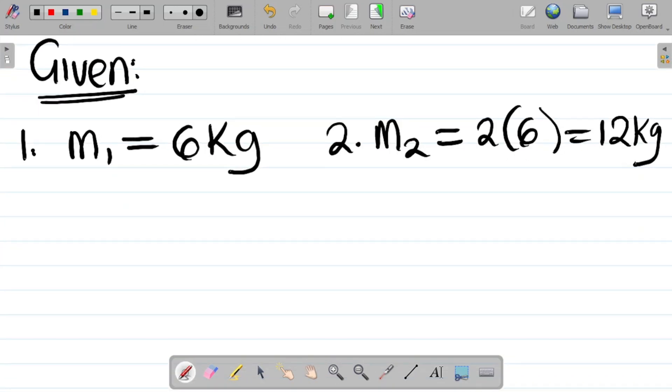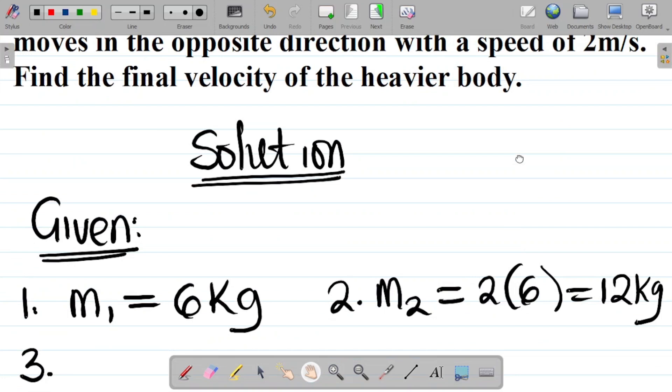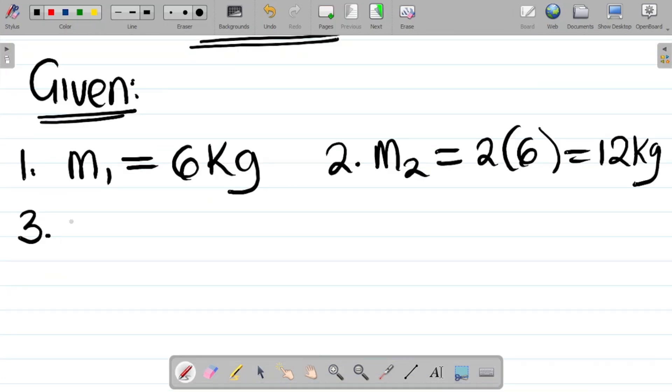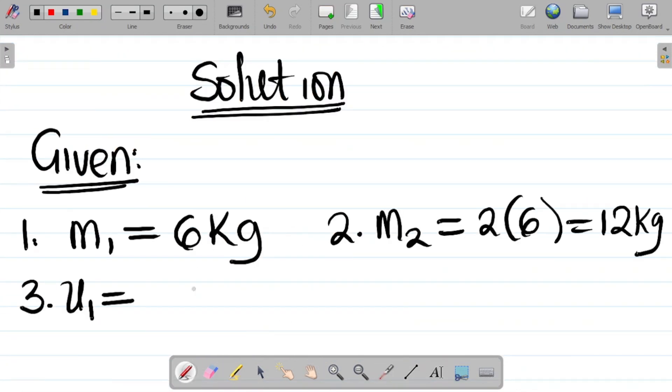Number three, what else are we given? The next thing from the question, they said a 6 kg mass moving with a speed of 4 m per second, that means the initial velocity u of mass 1, u1, is equal to 4 m per second.